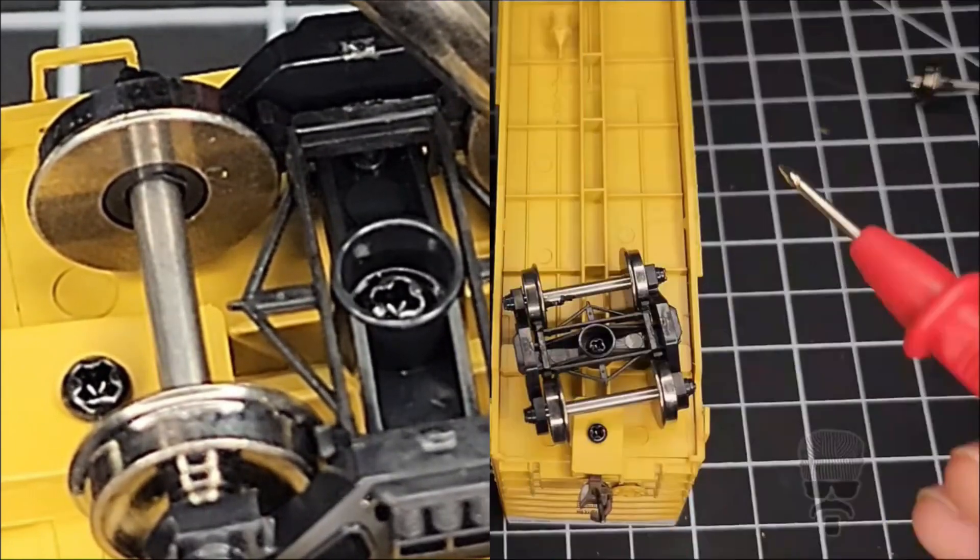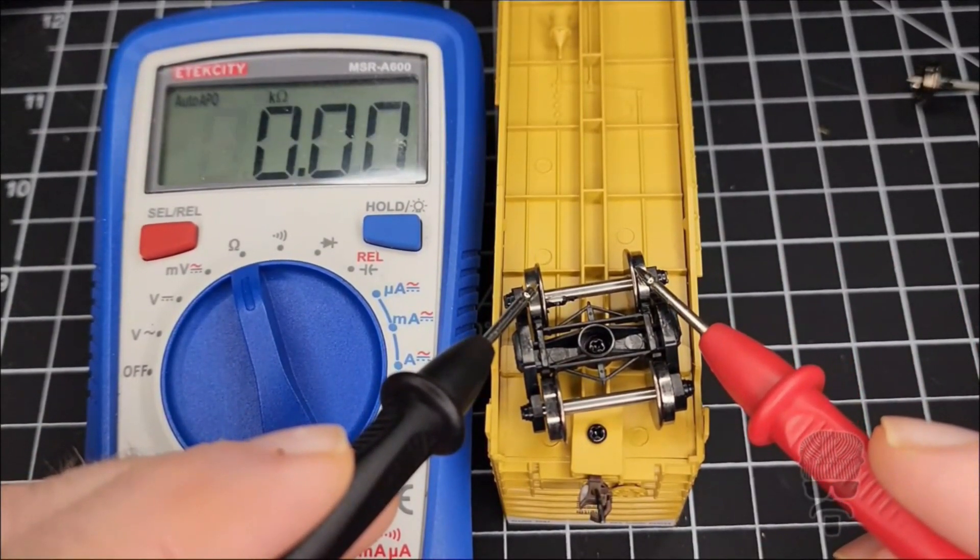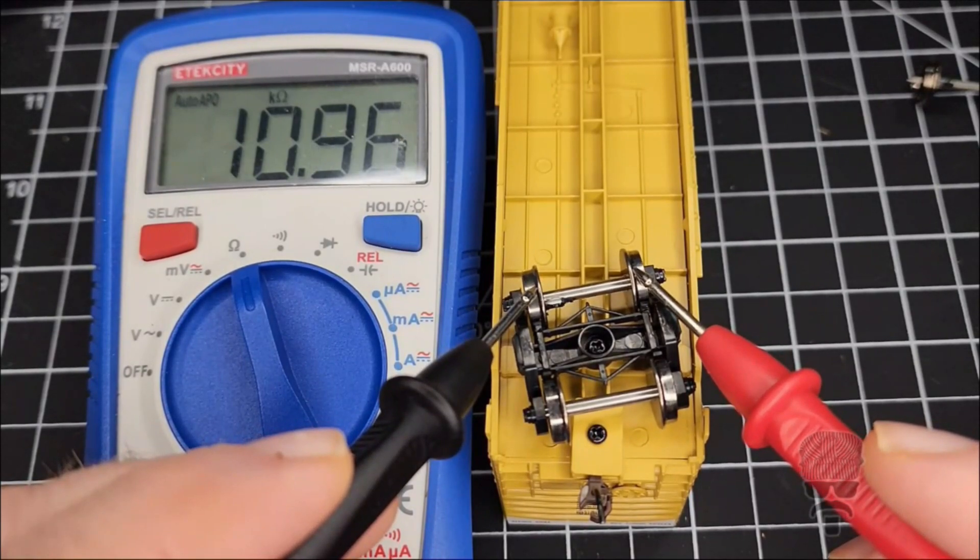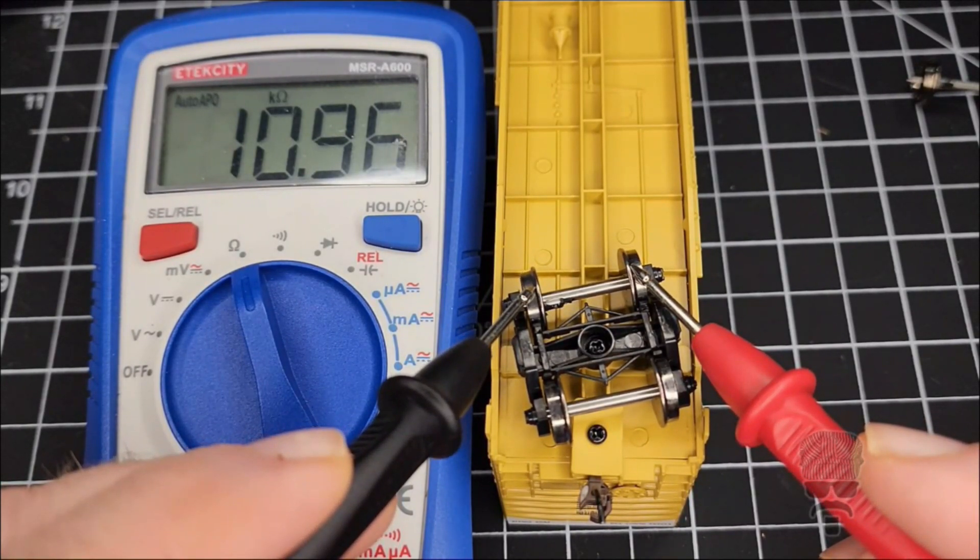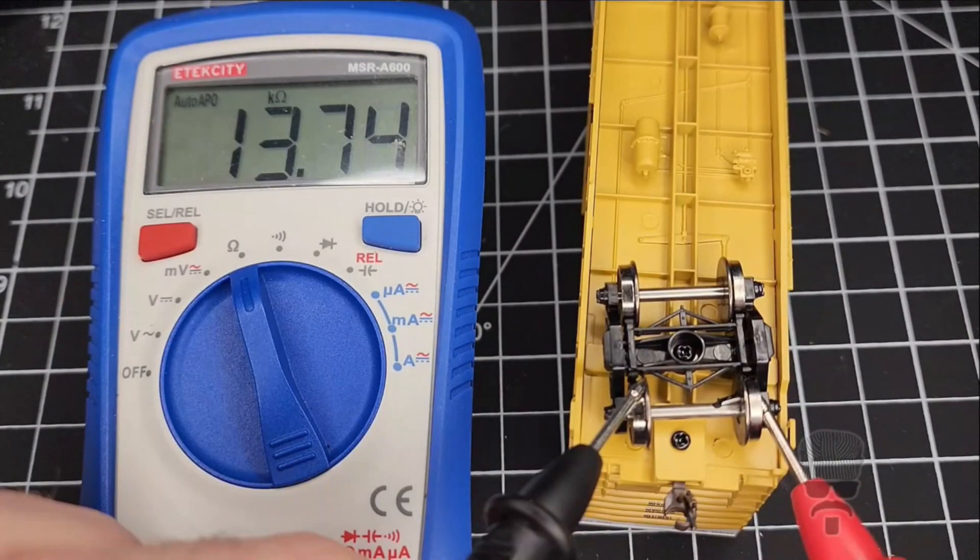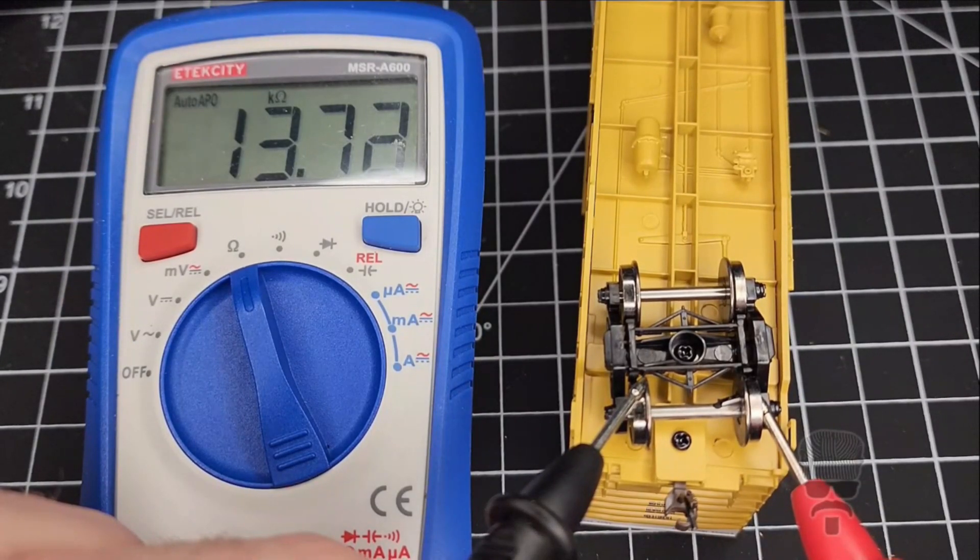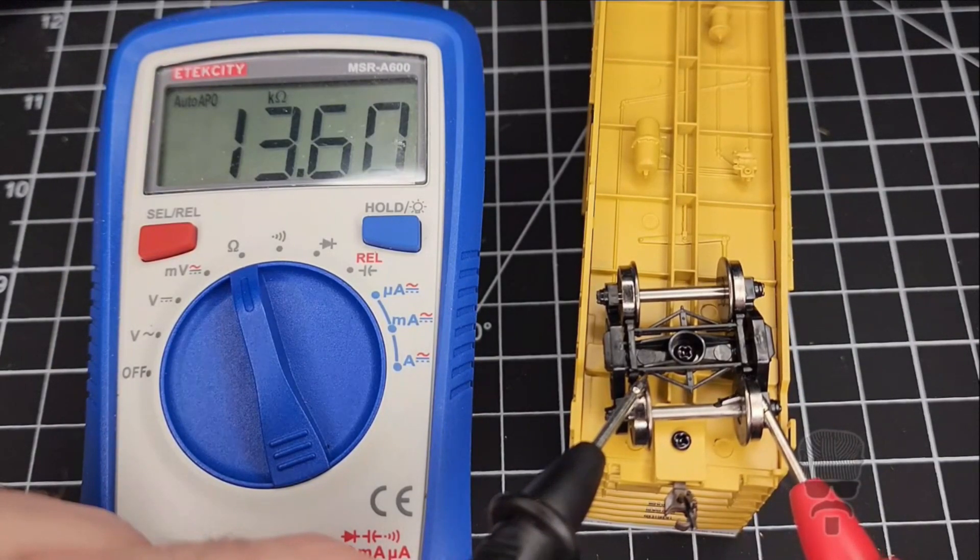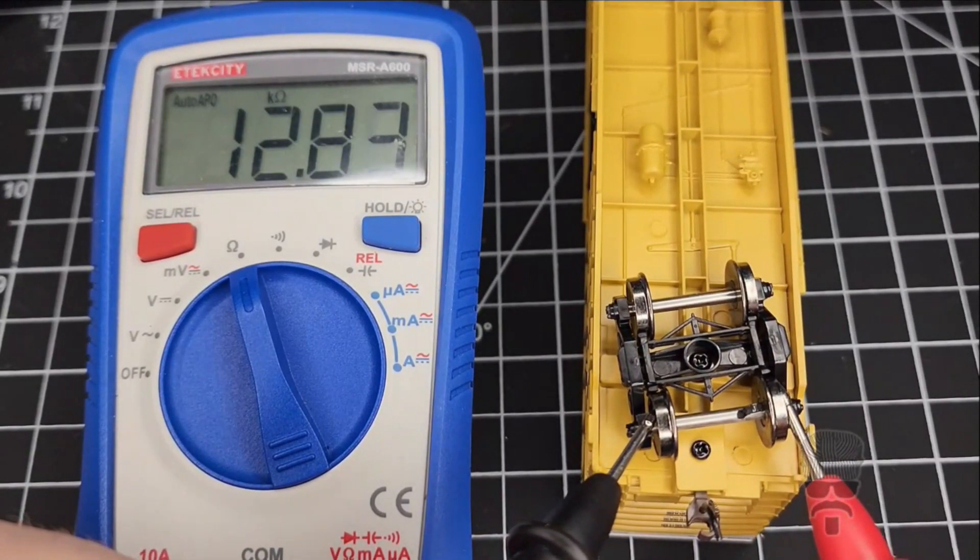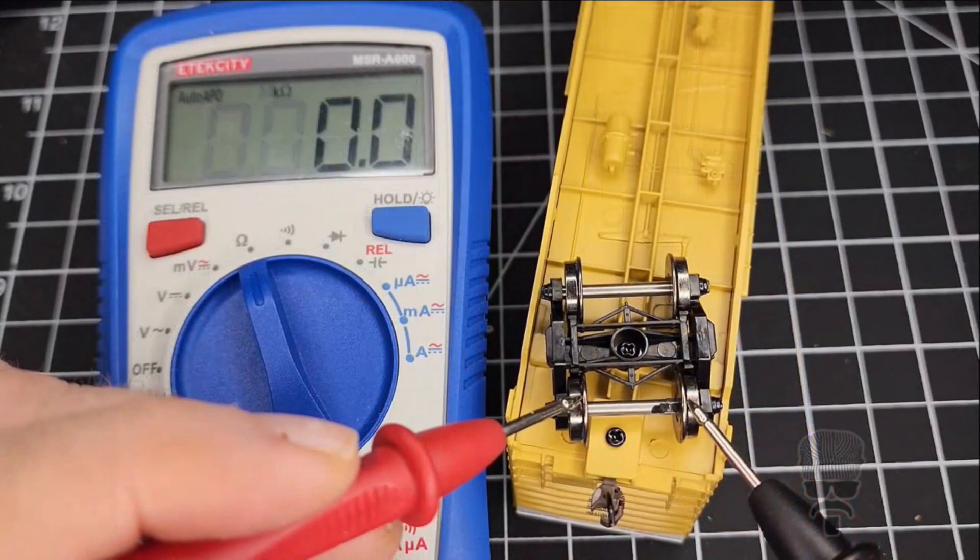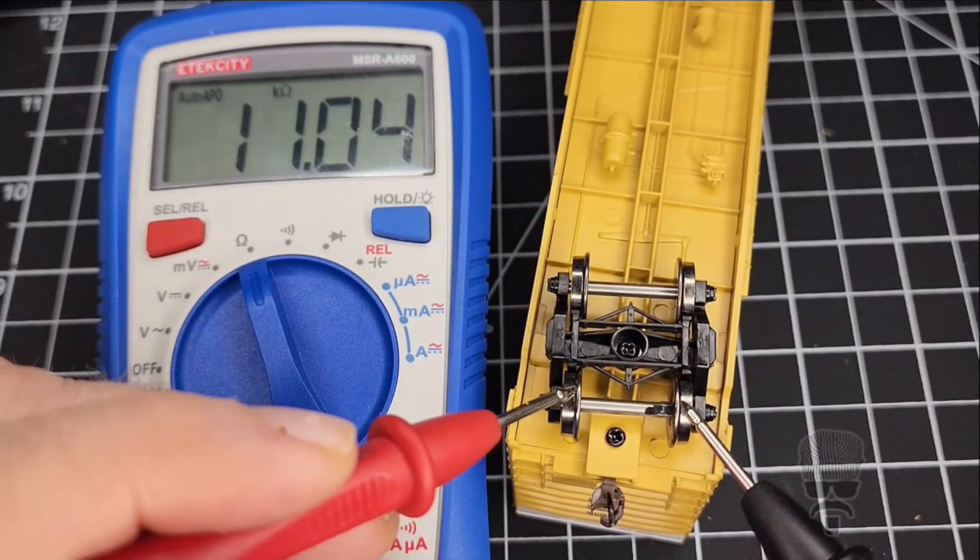Now we can break out our handy dandy meter and check our resistance. Right now it's just under 11k. That's what you're looking for. If you check your resistance too soon, your conductive paint might not be dry and it's going to give you some elevated resistance numbers. Eventually when the paint dries it will come in at about 11k. And there we go.